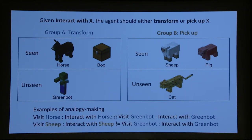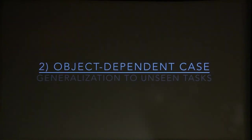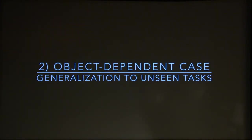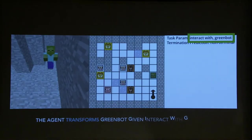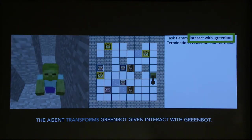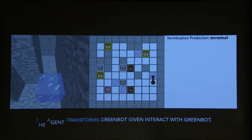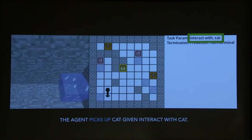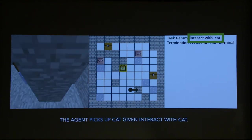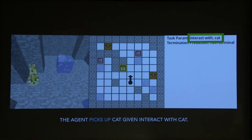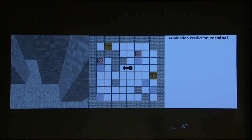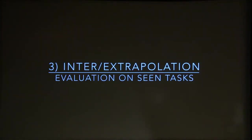That analogy doesn't hold for sheep and green bot, which are in different categories. We show the agent can generalize to unseen tasks with this approach. What the agent sees is on the left-hand side, and each map instance is different. It learns a program to handle this.